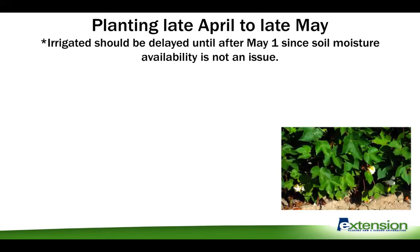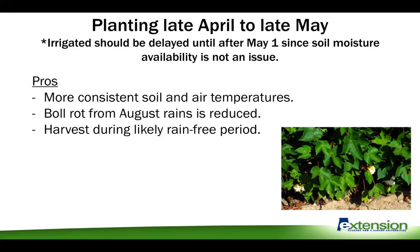The most common window to plant is late April to late May. We recommend that irrigated cotton should definitely wait until after May 1st to ensure soil and air temperatures are consistent. Since irrigation can supplement soil moisture, we're not worried about capturing early moisture availability. The pros of this window are that soil and air temperatures are more consistent, with no swings in temperature, and you reduce the risk of boll rot by delaying cracking past August and September.